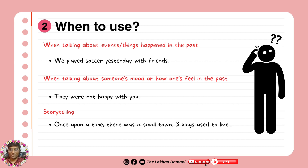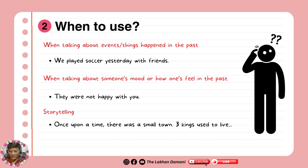Before that, let's finish the third point: storytelling. Storytelling is very common in past tense when you want to describe past stories or past things. For example, once upon a time there was a small town, three kings used to live, etc. You can create more stories like that.